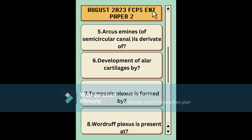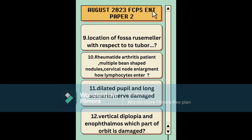The Woodruff plexus question asked where it is present — this is the site for posterior epistaxis, so it's important to memorize its location as given in the ENT book. The next question asked about the location of a fossa with respect to the tuber — I can't recall the full sentence, but it was about fossa location as described in Eustachian tube anatomy.